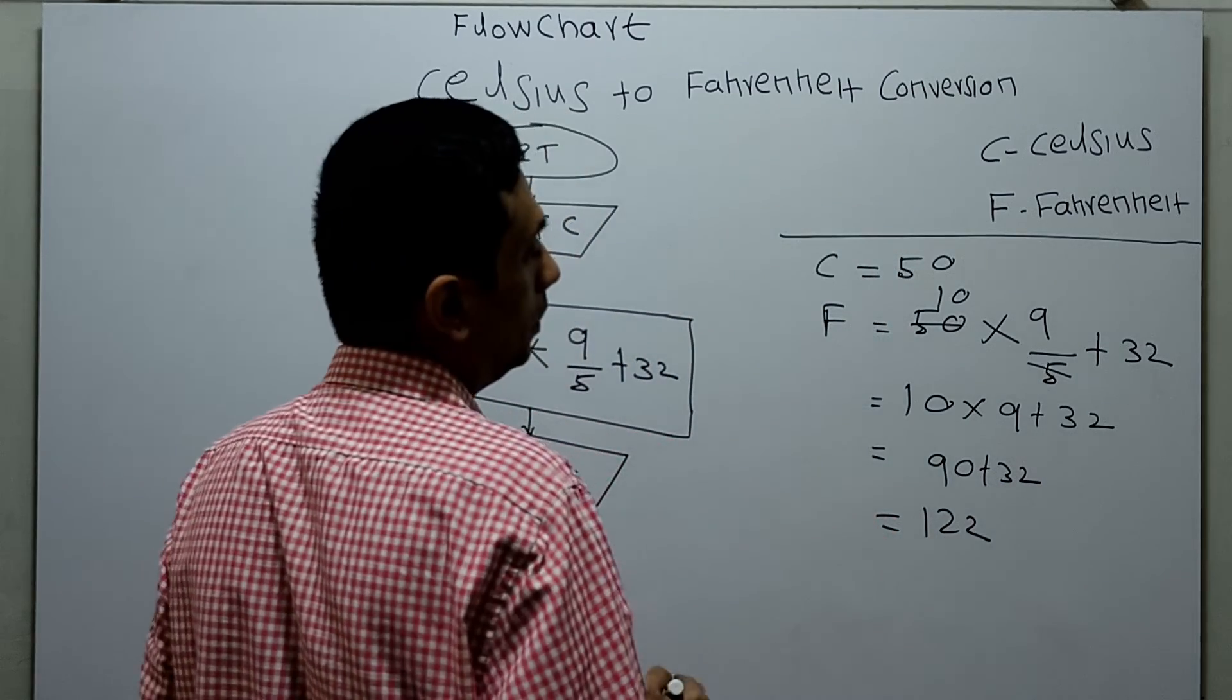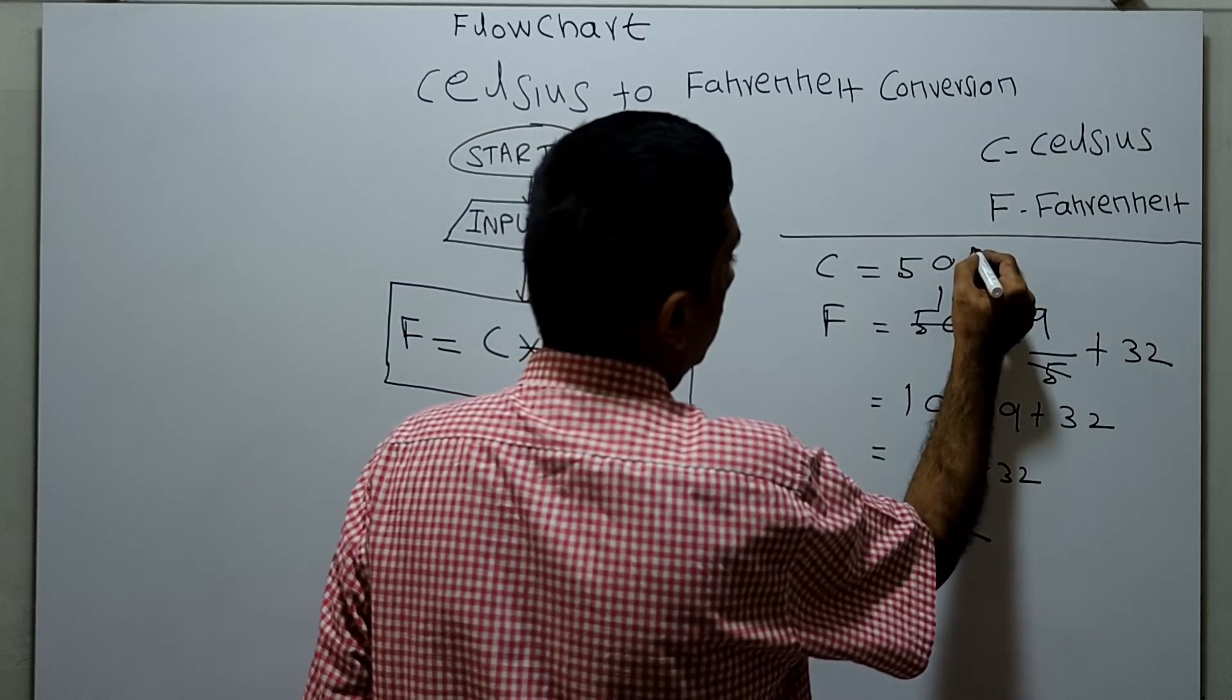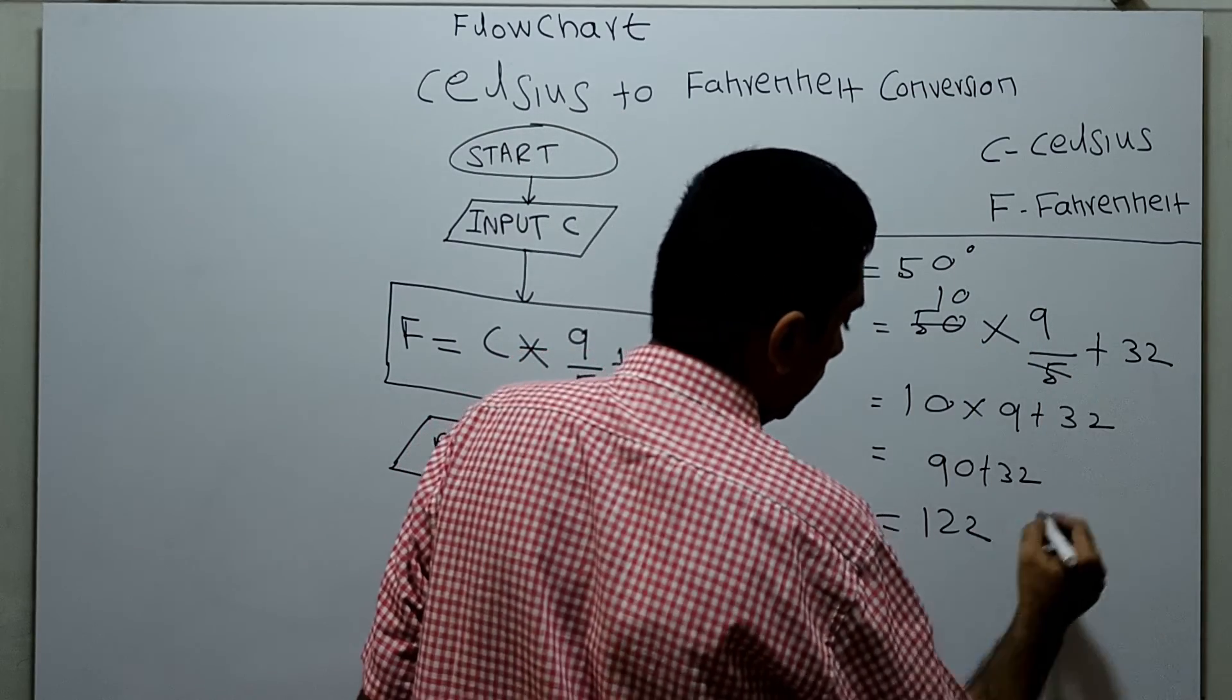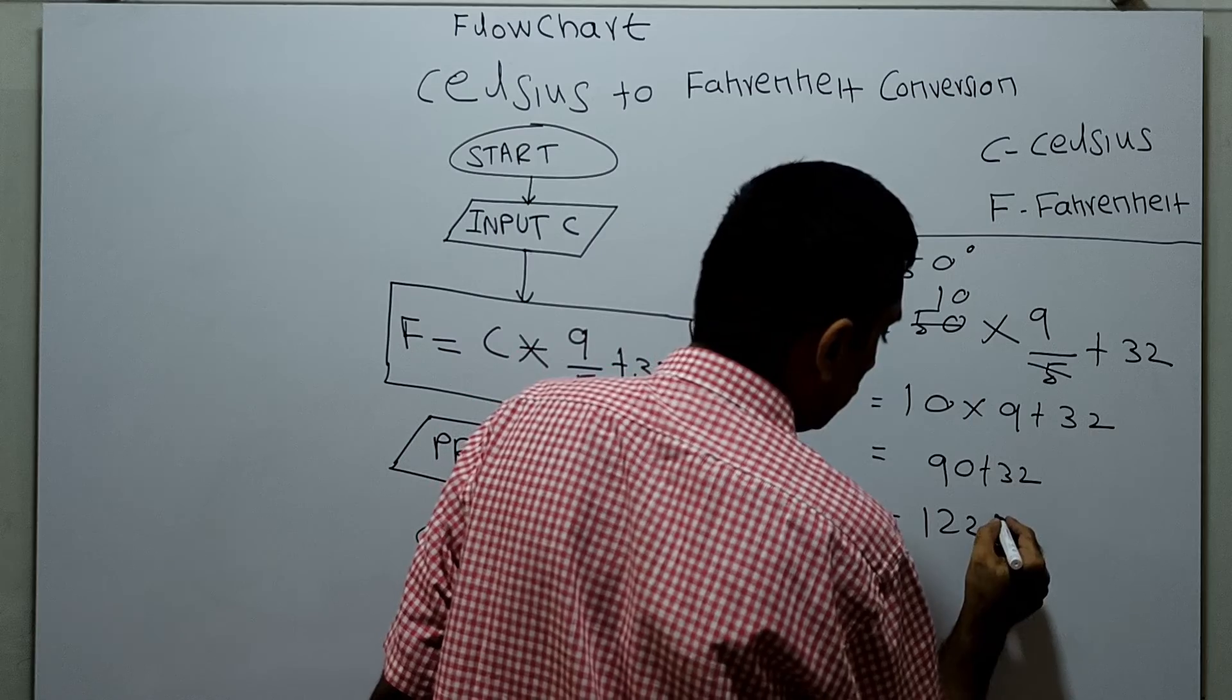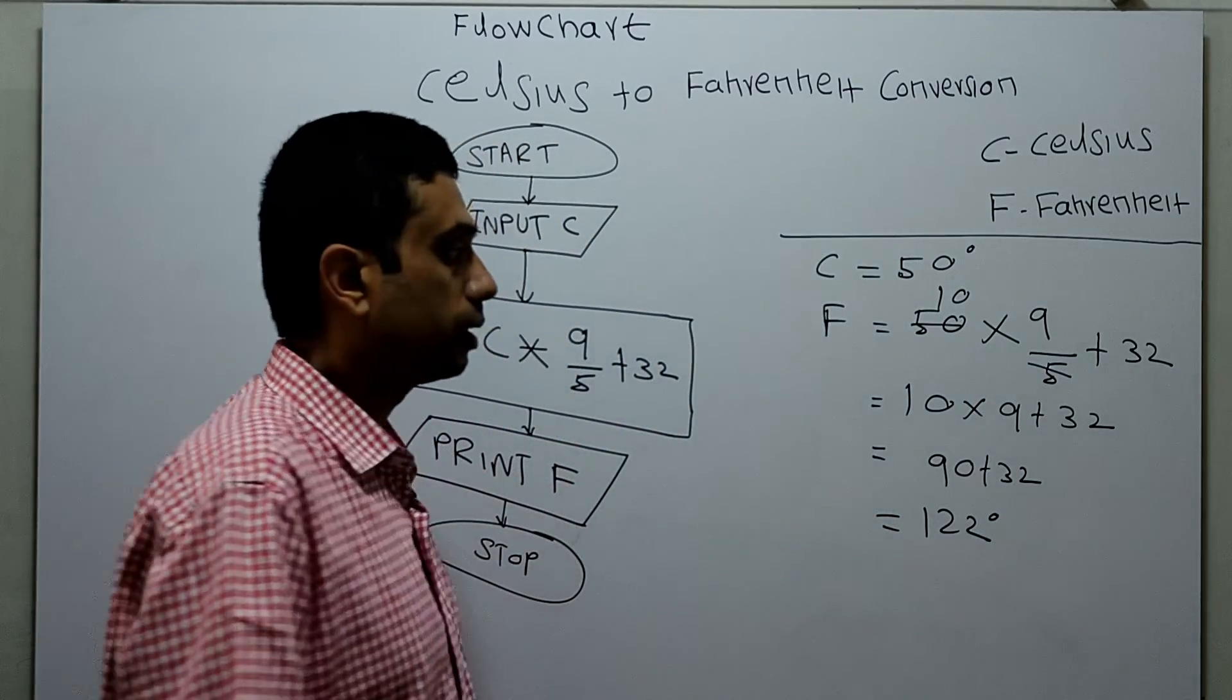So my given input Celsius is 50 degrees centigrade. My output, by calculating all this, the Fahrenheit value is 122 degrees Fahrenheit.